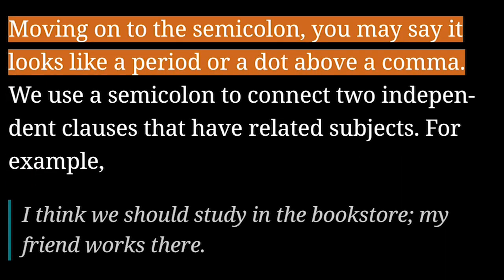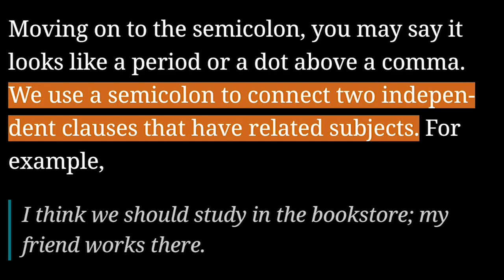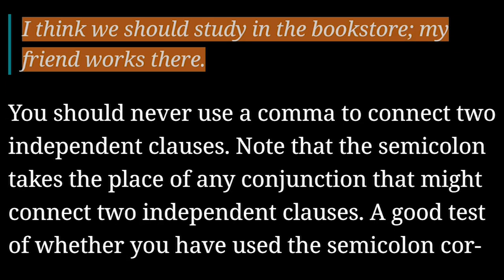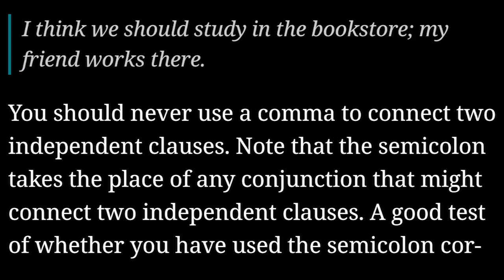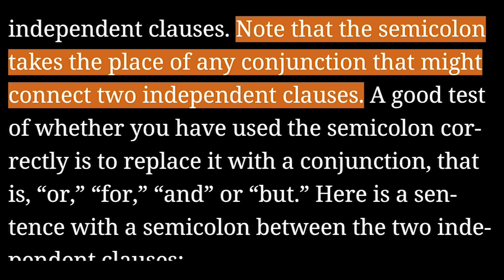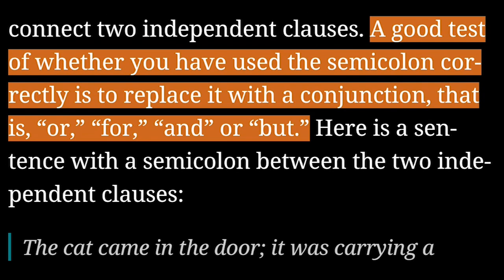Moving on to the semicolon — you may say it looks like a period or a dot above a comma. We use a semicolon to connect two independent clauses that have related subjects. For example: 'I think we should study in the bookstore, semicolon. My friend works there.' You should never use a comma to connect two independent clauses. Note that the semicolon takes the place of any conjunction that might connect two independent clauses. A good test of whether you have used the semicolon correctly is to replace it with a conjunction — that is, or, for, and, or but.